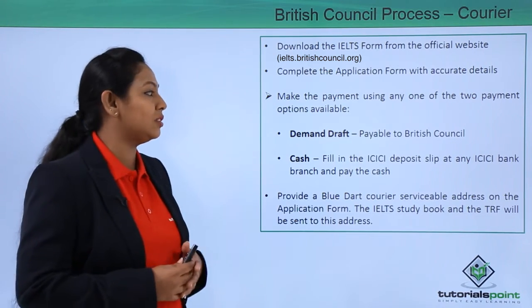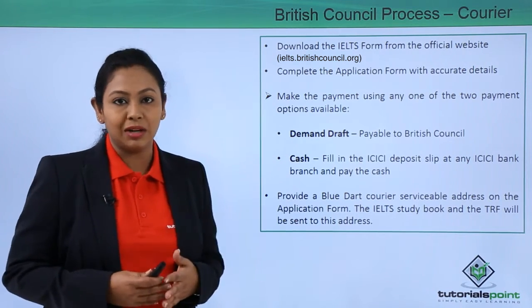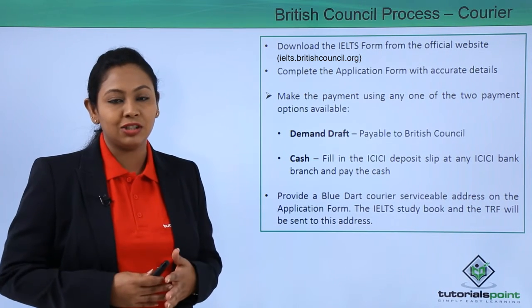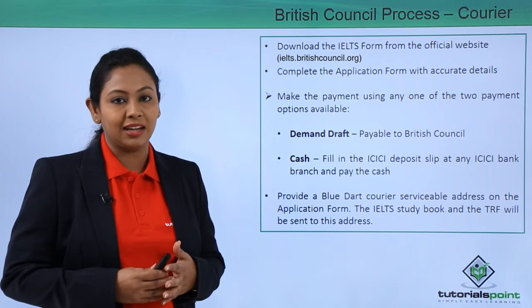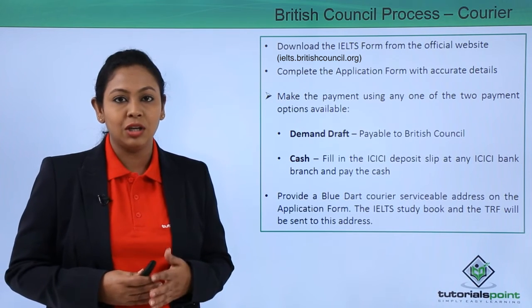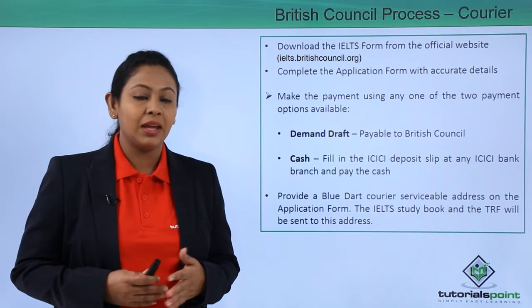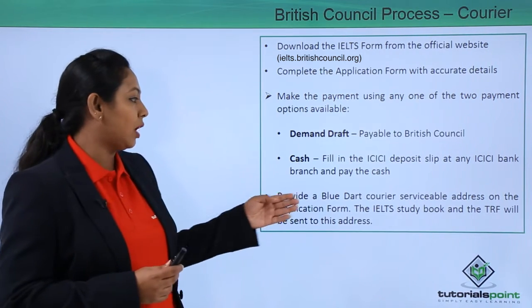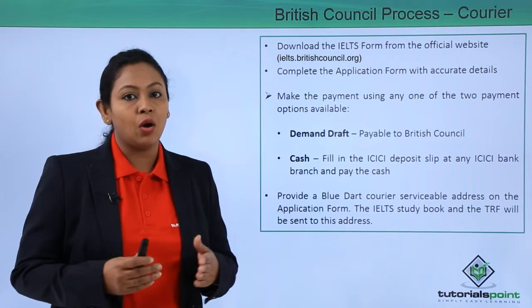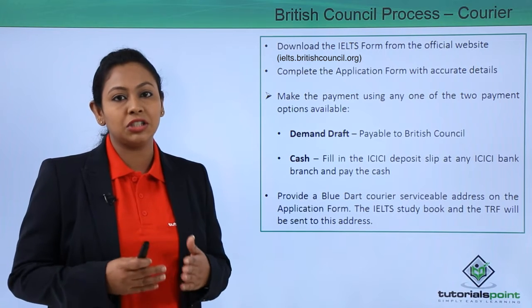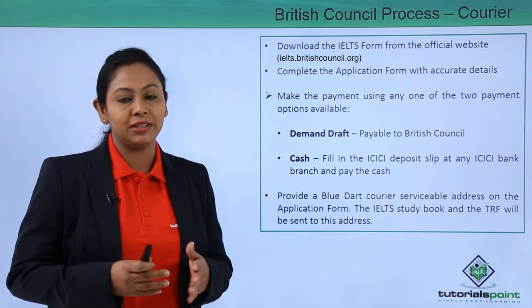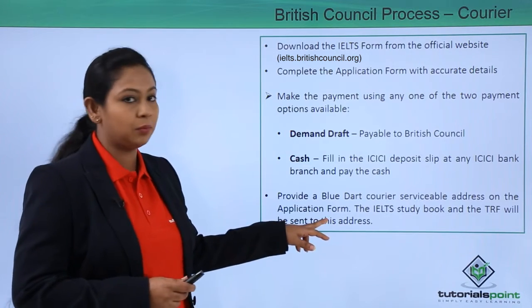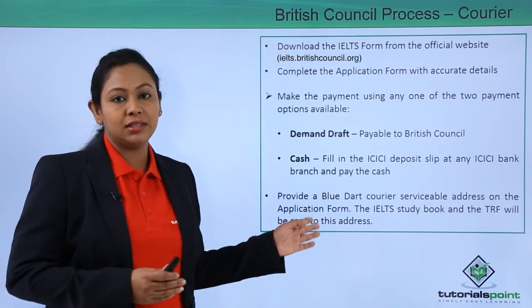Then make a payment using one of two options: one is through a demand draft payable to the British Council, and the other is through cash, where you deposit cash at an ICICI Bank branch using the cash deposit slip and collect the receipt. Provide a blue dark courier-serviceable address on your form so that you receive your TRF and your IELTS booklet at that address.